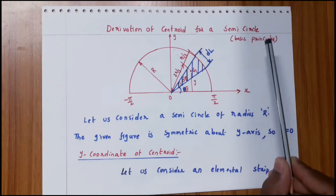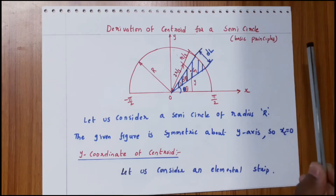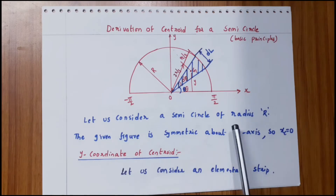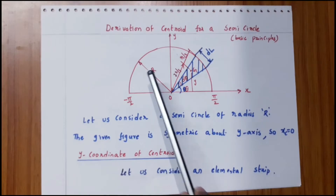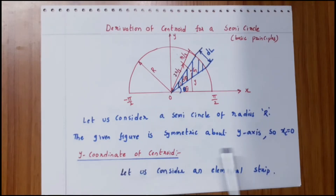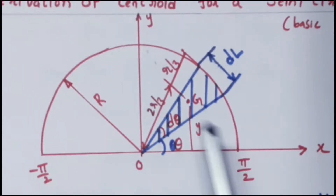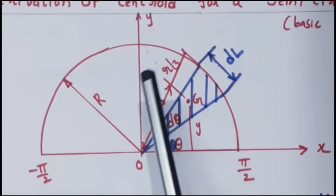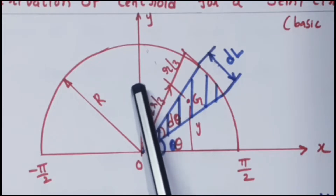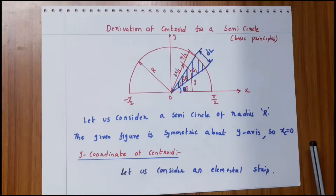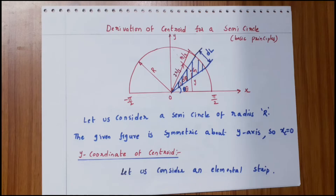Derivation of centroid for a semicircle from basic principles. Consider a semicircle of radius R. The given figure is symmetric about the y-axis, so the centroid lies on the y-axis. Therefore, the x-coordinate of the centroid is 0. Now we calculate the y-coordinate of the centroid.